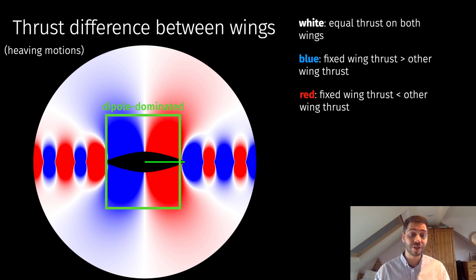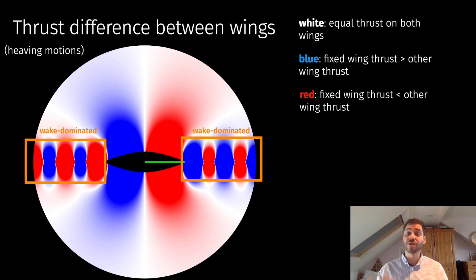You can immediately identify there are two main regions: there's this center region that we might call the dipole-dominated region, because that's the position where the forces on the wings are dominated by the one over z effect. There's another region outside of that dipole region that we could call the wake-dominated region, so that's the case where the fluid forces are mainly defined by the effect of one wing swimming in the wake of the other.